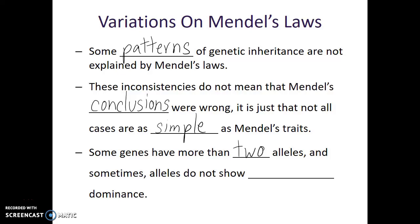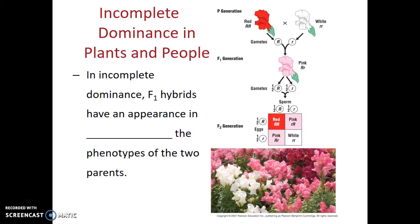Sometimes alleles do not show complete dominance. Complete dominance is when the heterozygote looks just like the parent showing the dominant phenotype. Let's look at some exceptions to dominance. For some organisms, their traits display what is called incomplete dominance, and it may also just be certain traits in an organism.